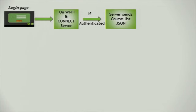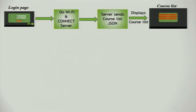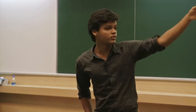First is the login screen, where the student enters a student ID and URL and presses Connect. This button switches on the Wi-Fi on the client and tries to authenticate by connecting to the server and checking the user entry — student ID and MAC address. When connecting, the app takes the user ID as well as the MAC address, and these are linked and stored in the database. If authentication is correct, the student is switched to another page which lists the courses they have registered for previously.